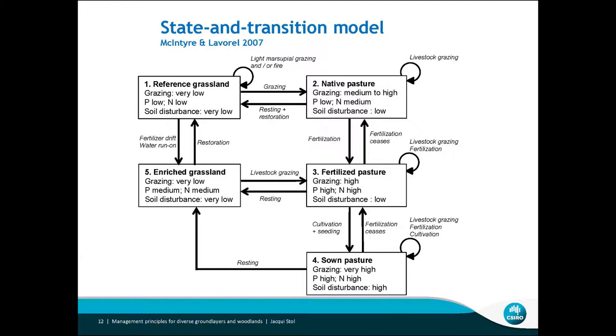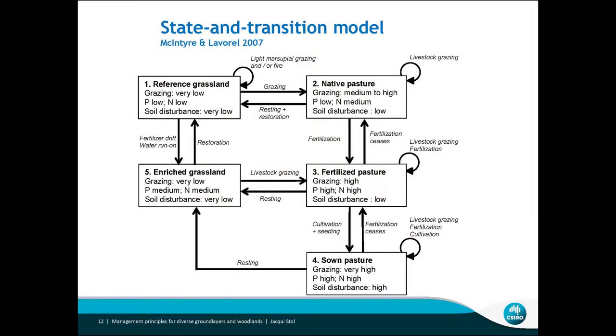The state and transition model moves away from the old Clementsian succession story — where you just got more and more species until you reached a climax. This model says we have different states in the grasslands and woodlands, and they actually shift backwards and forwards based on grazing, resting, and restoration. There are triggers that shift between these states, and the little circles describe what is required to maintain each system.